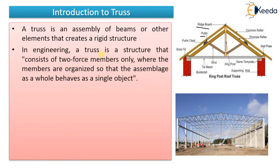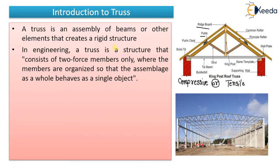In engineering, a truss is a structure that consists of two-force members only, where the members are organized so that the assemblage as a whole behaves as a single object. A truss member will be either subjected to compressive force or tensile force. It cannot carry — and will not be subjected to — bending moment and shear forces. We will only design it for axial forces: either compressive or tensile. That's why it is called two-force members.